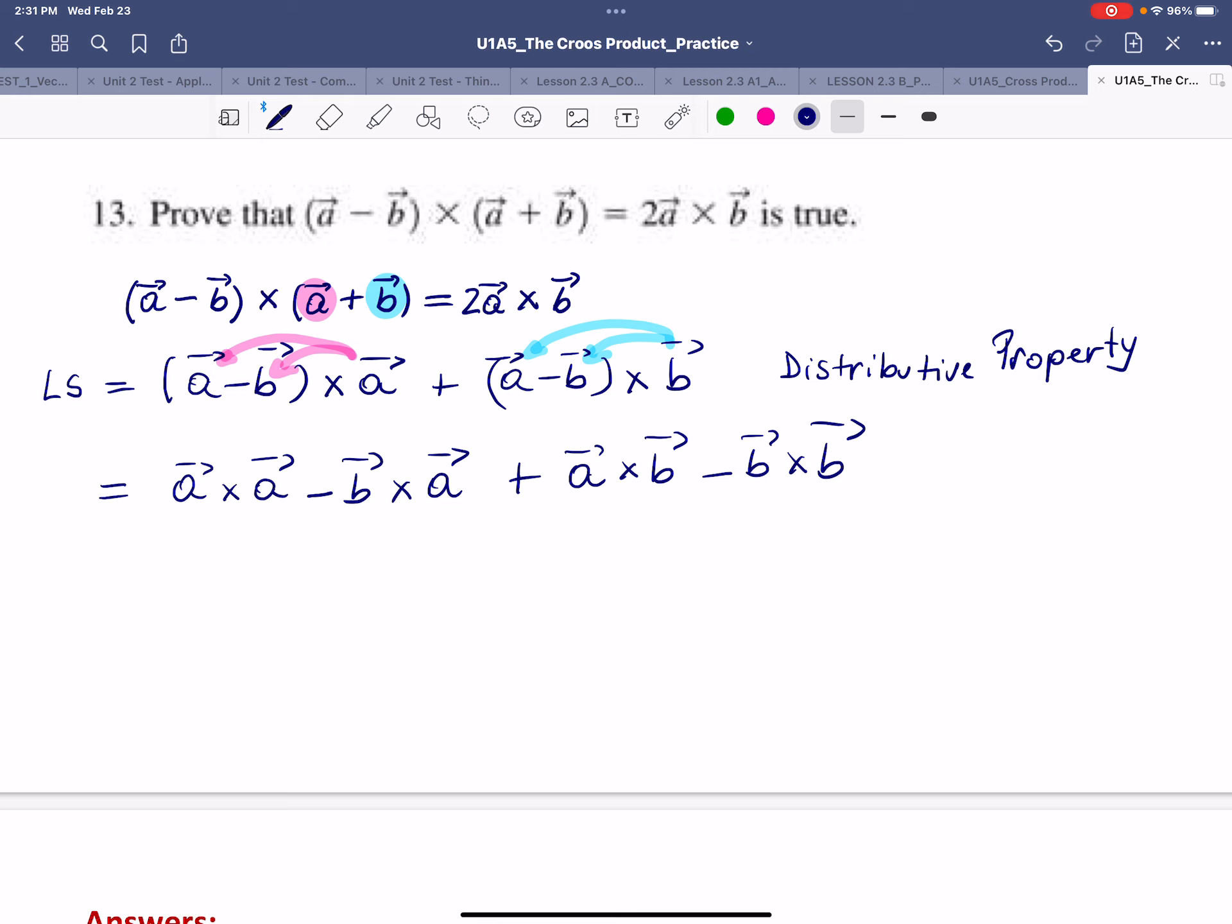Now, a vector cross with itself will always equal 0. And we know this because that would equal magnitude of A times magnitude of A times the sine of the angle made between a vector and itself, which will be sine of 0. And because sine of 0 equals 0, that will make the whole expression here equal to 0.